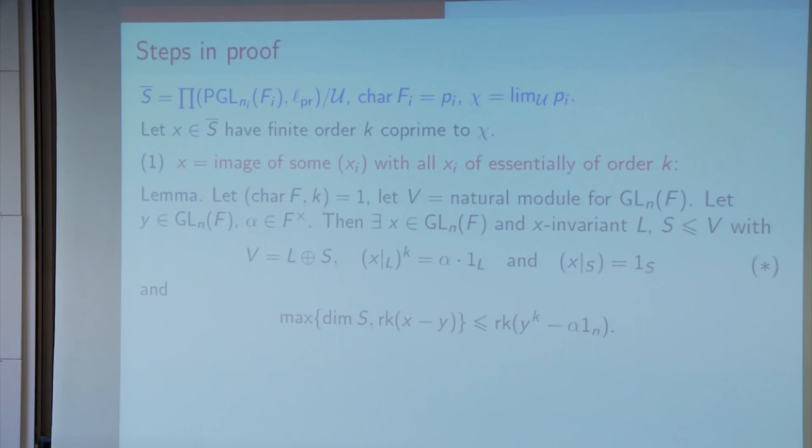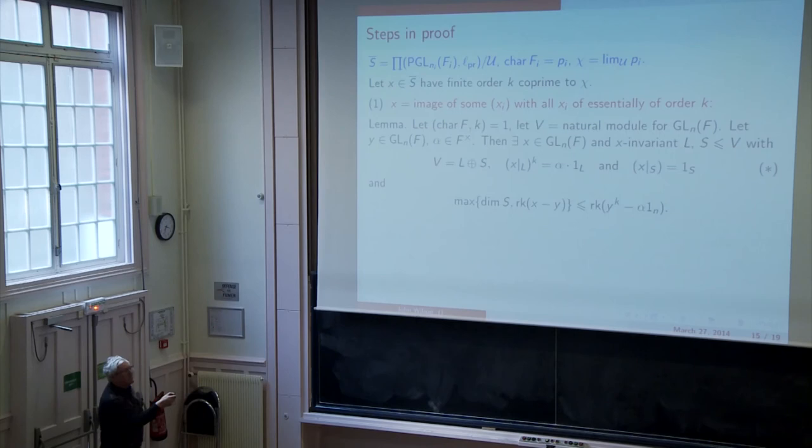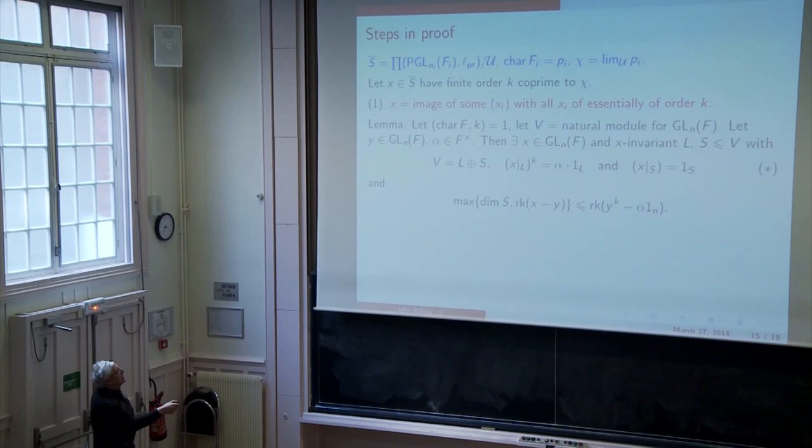This my first year students would just about understand, I think. Actually, they do serious linear algebra after they do module theory, which is slightly bizarre. So, let K be some integer co-prime to the characteristic of the field F. Let V be the natural module for GLN(F). And suppose they've got some element Y in GLN(F) and α in the field, non-zero. Then there exists X in the general linear group and invariant subspaces L and S such that V is the direct sum of L and S. L stands for large, S stands for small. Such that on the large space, the kth power of the element is equal to α times the identity. And on the small space, it's just the identity.